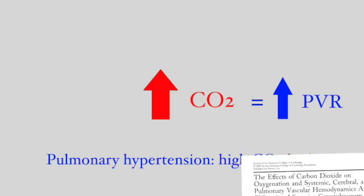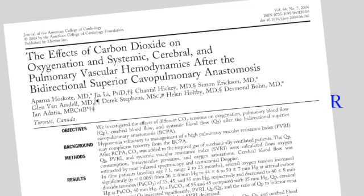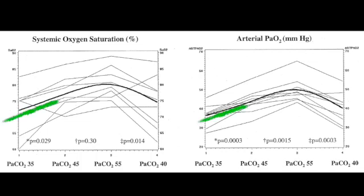But a cool study published in 2004 showed that systemic oxygenation was better in Glenn patients with higher CO2s. Increasing Glenn patients' CO2 from 35 to 55 improved arterial oxygenation.